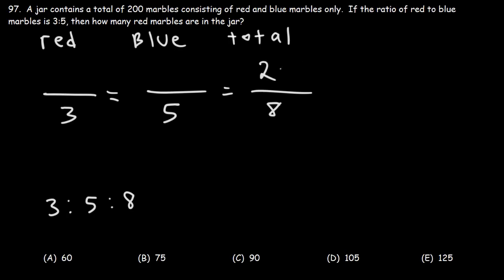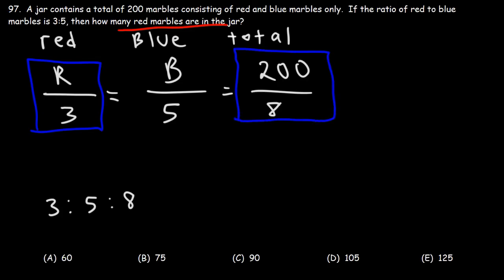Now, the total number of marbles is 200. We're going to say R is the number of red marbles, B is the number of blue marbles. Now, our goal is to calculate the number of red marbles. So what we're going to do is we're going to set this fraction equal to this one. So R over 3 is equal to 200 over 8.